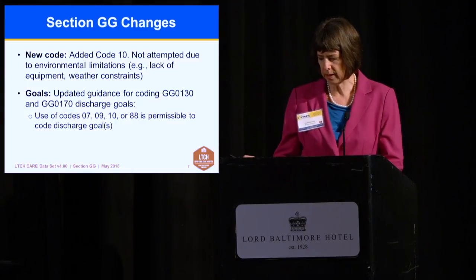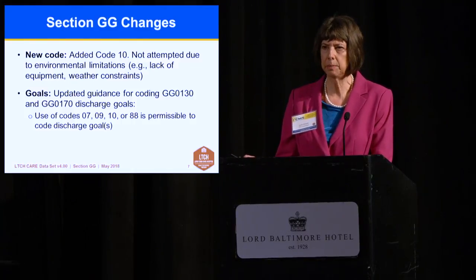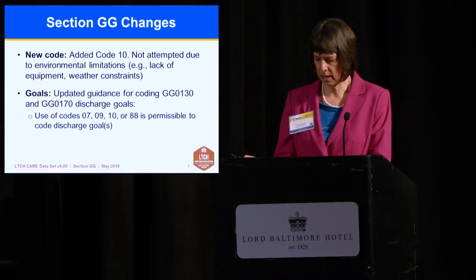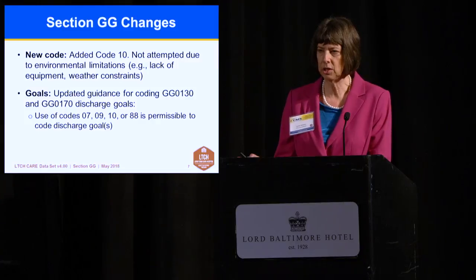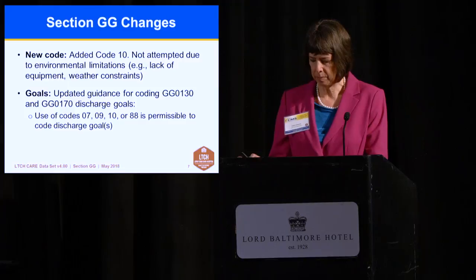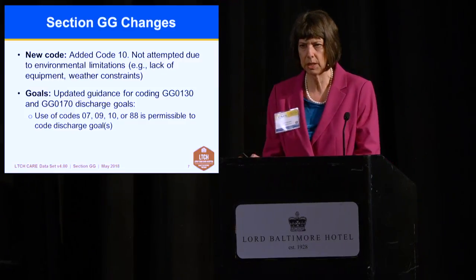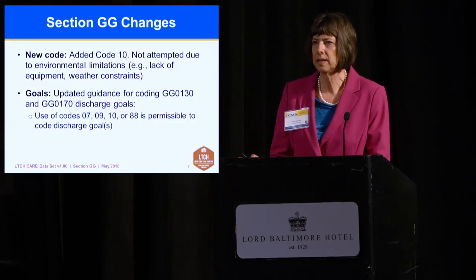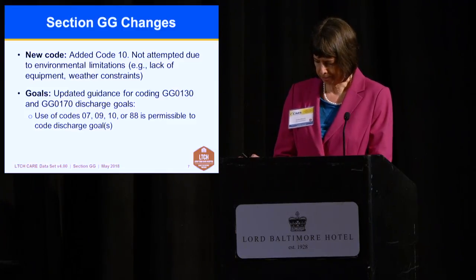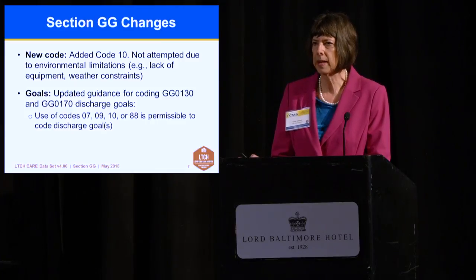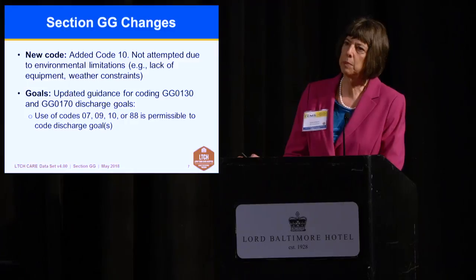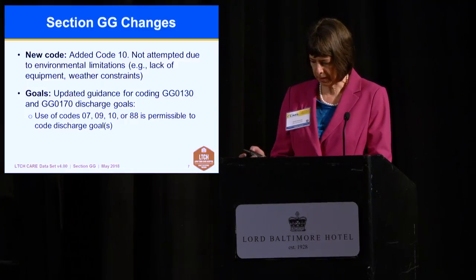We've added the newly added Code 10 — not attempted due to environmental limitations. It can be used in LTCHs but is expected to be used extremely infrequently. It was added to standardize the cross-setting measure, including all GG codes across settings in the 2018 PAC QRP assessment instruments. Code 10 is used more frequently in other settings, such as the IRF-PAI, for items like car transfer where a car or car simulator may not be available.